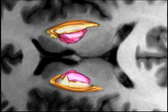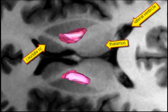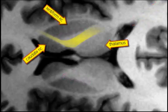After removal of the putamen only the globus pallidus is left. Now you can see very clearly that the entire lentiform nucleus is completely embedded in white matter.